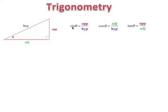There's a nice mnemonic device for remembering these. Sine of theta is opposite over hypotenuse — SOH. Cosine is adjacent over hypotenuse — CAH. Tangent is opposite over adjacent — TOA. So: SOH-CAH-TOA. If you remember SOH-CAH-TOA, you'll remember sine is opposite over hypotenuse, cosine is adjacent over hypotenuse, and tangent is opposite over adjacent.